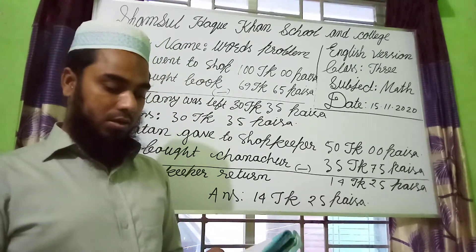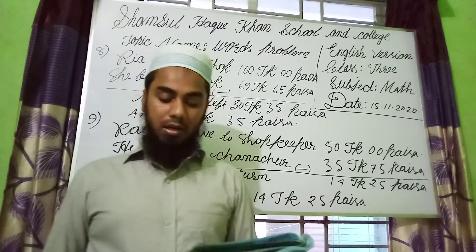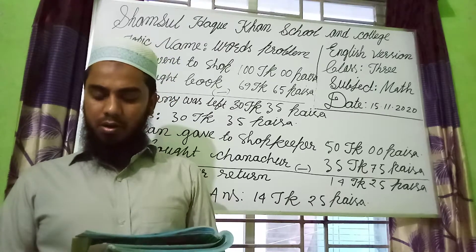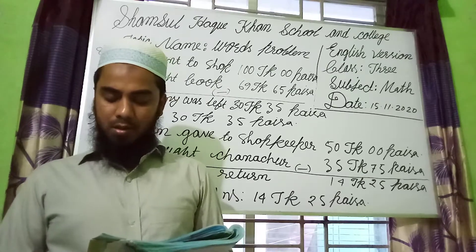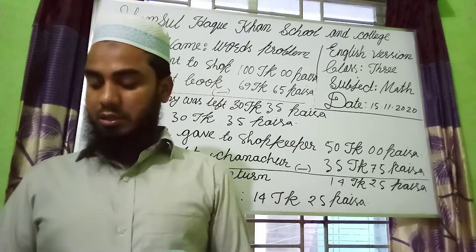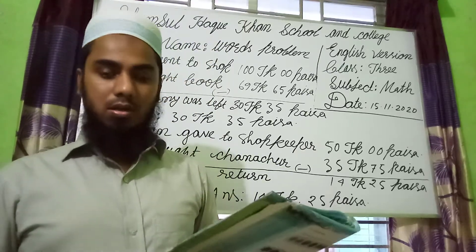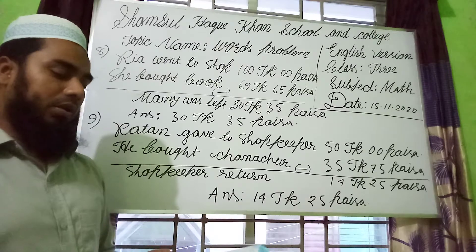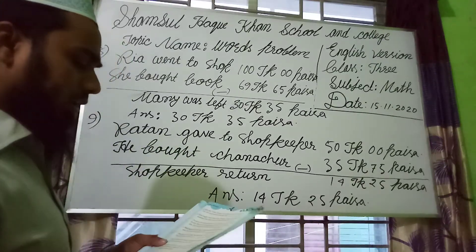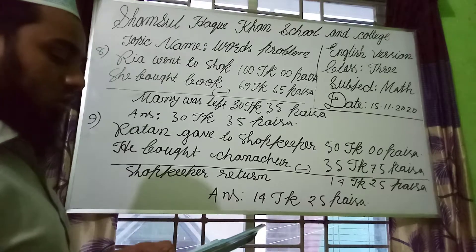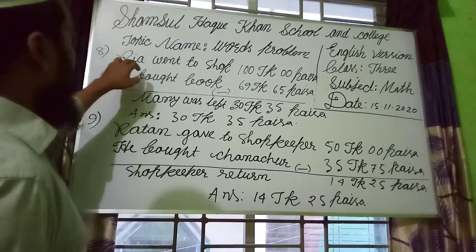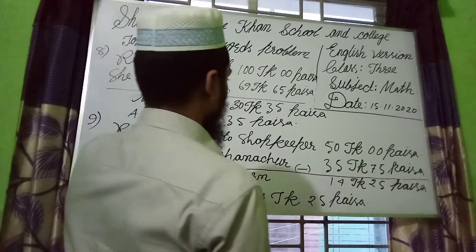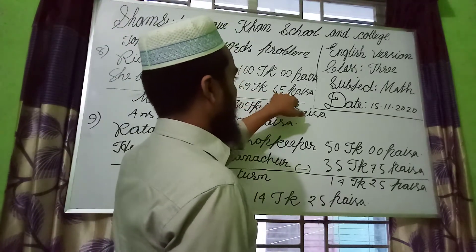Now numbers 8 and 9. Number 8: Rhea went to the shop with 100 Taka. She bought a book for 69 Taka 65 Paisa. How much money was left with her? This type of math will be subtraction.